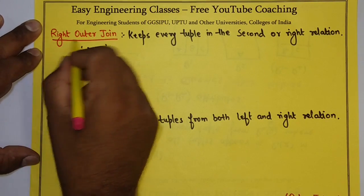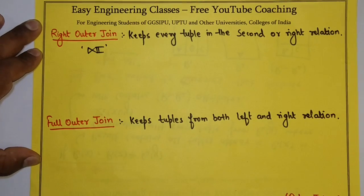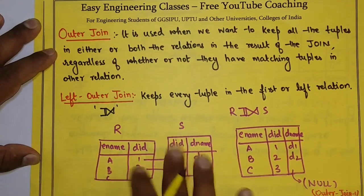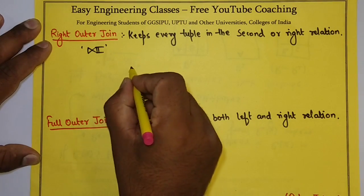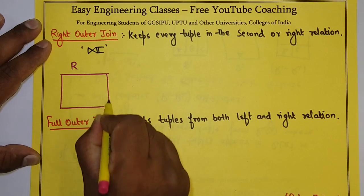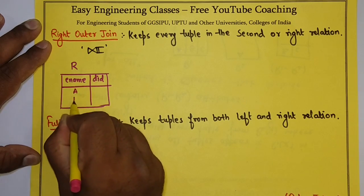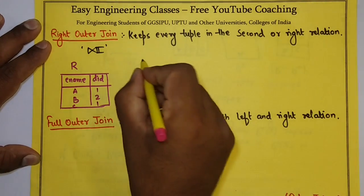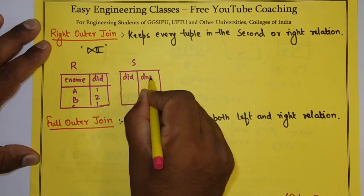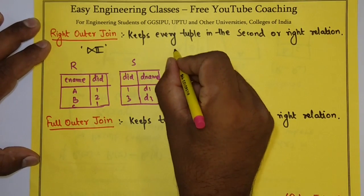Similarly, there is right outer join, which keeps every tuple in the second or right relation, and it is drawn like this. To perform right outer join on two relations: relation R has employee name and department id with values A, B, C and 1, 2, 1 respectively. Relation S contains department id and department name with values 1, 3 and D1, D3.